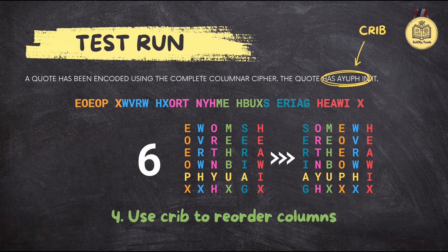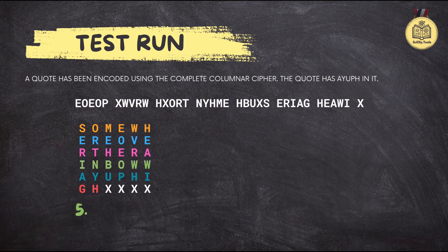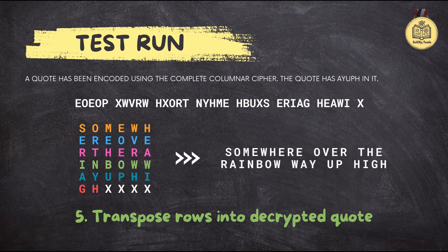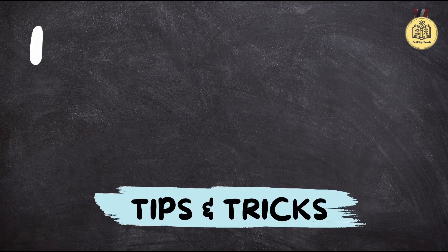Now for the final step: read the rows from left to right. 'Somewhere over the rainbow, way up high.' You did it — you navigated that columnar cipher like a pro! I've got to say, that was actually really fun, and the feeling of solving it is awesome.